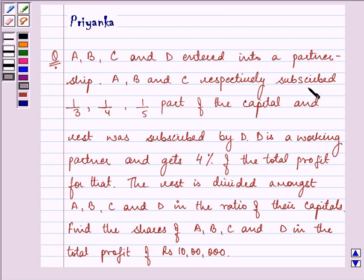A, B and C respectively subscribed 1 by 3, 1 by 4, 1 by 5th part of the capital and rest was subscribed by D.